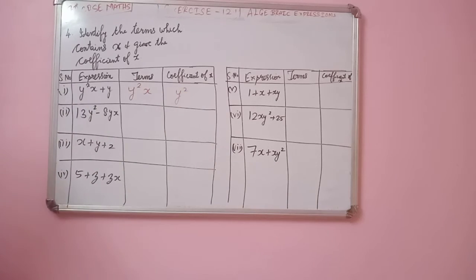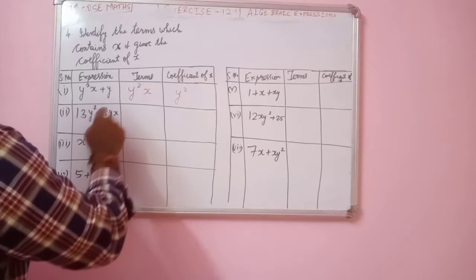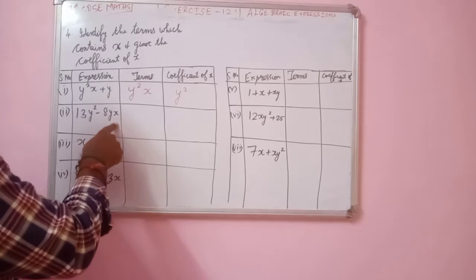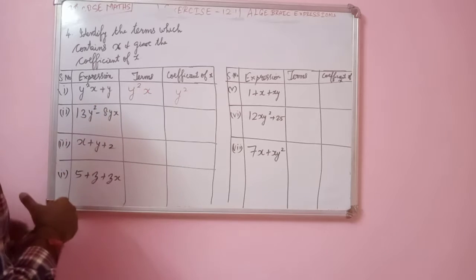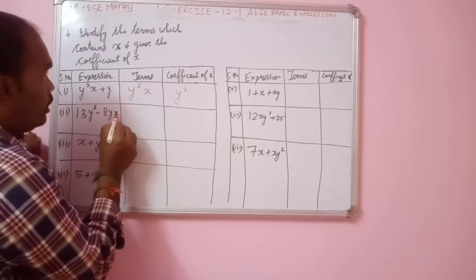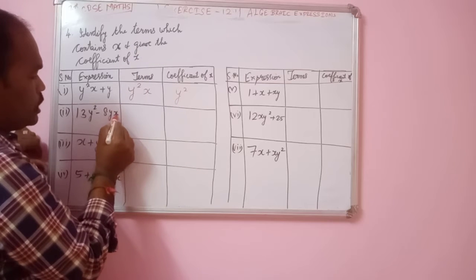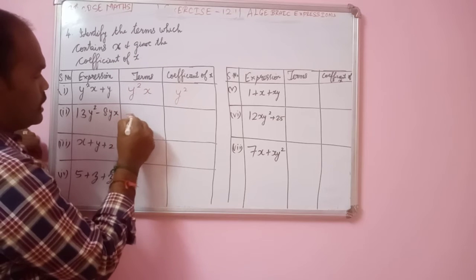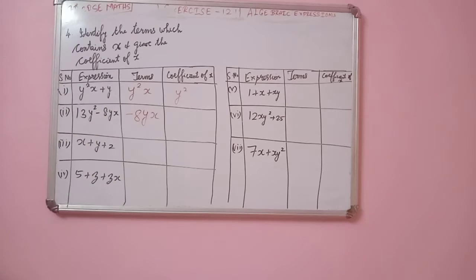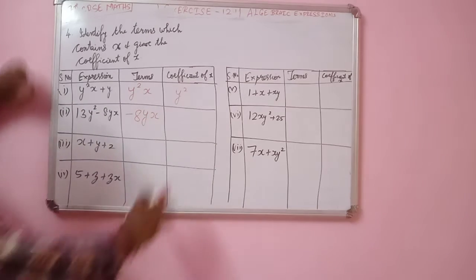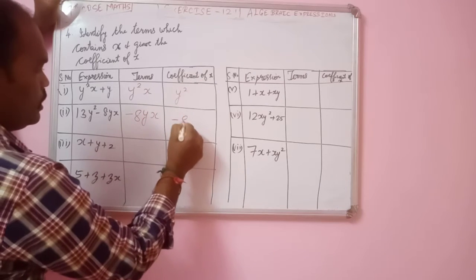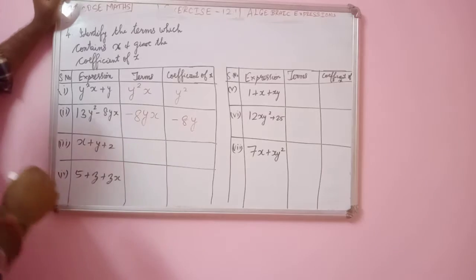Next, for the expression 30y² minus 8yx, the term which contains x is minus 8yx. The coefficient of x in minus 8yx is minus 8y.